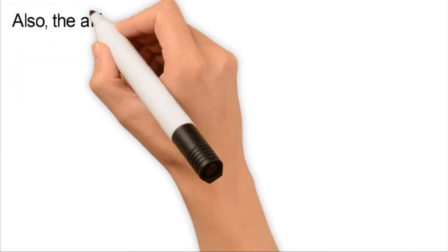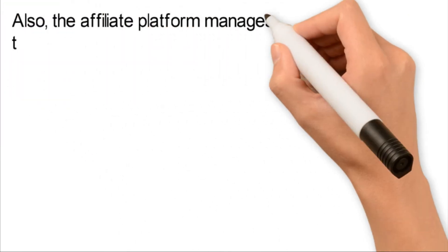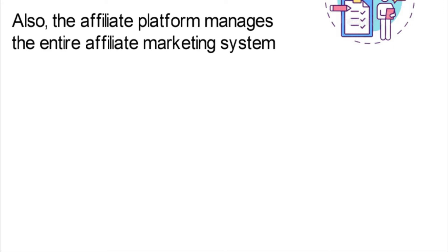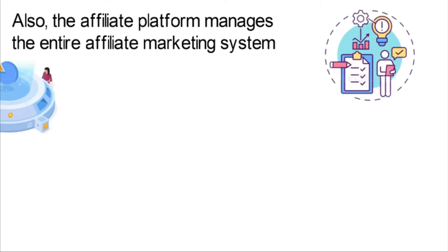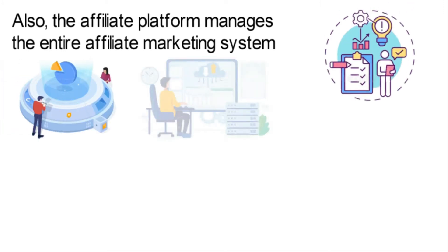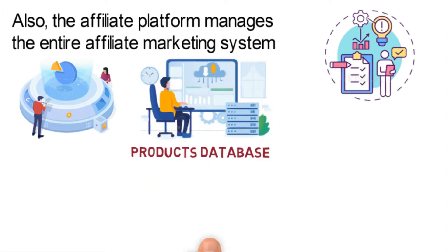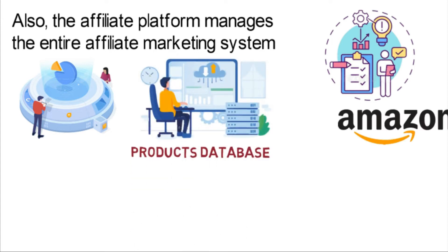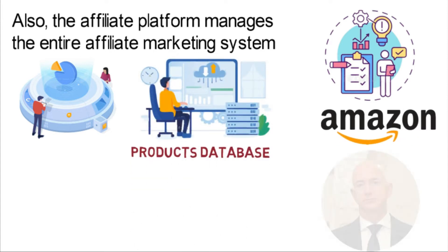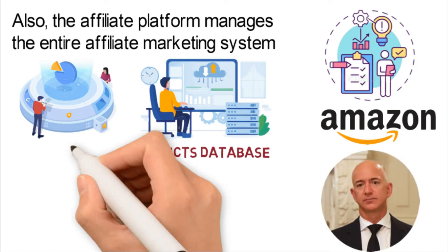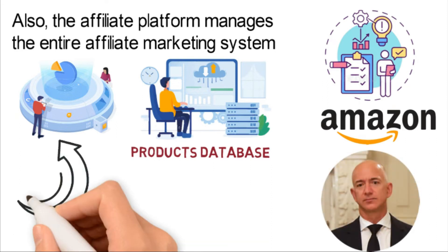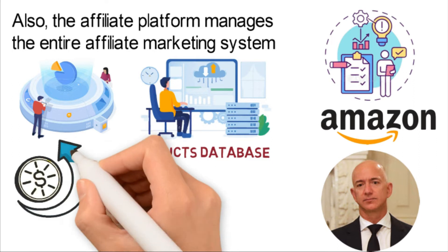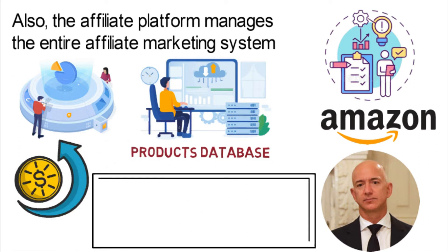The affiliate platform manages the entire affiliate marketing system — for example, it manages and sustains commission accountability, tracking sales reports, and most importantly, it is the product's database. Amazon is an example of an affiliate platform. The owner of Amazon, Jeff Bezos, owned no product on the platform but gets a commission on products purchased. That is what affiliate marketing entails.